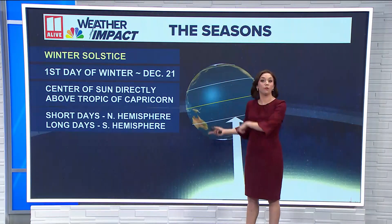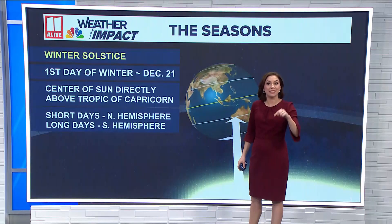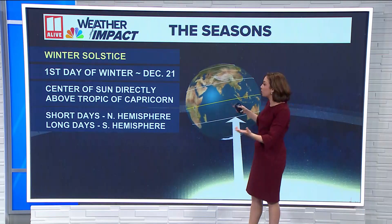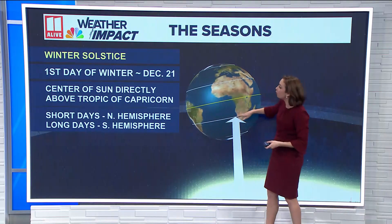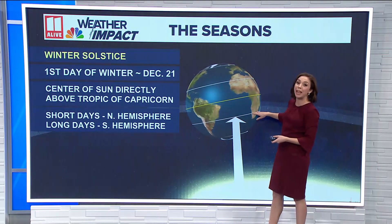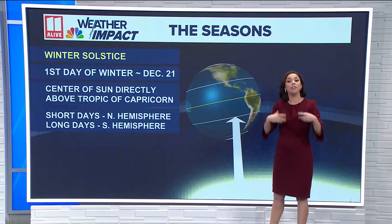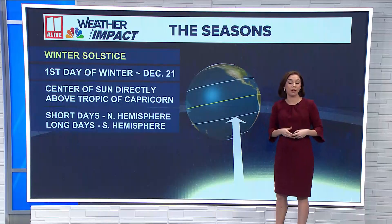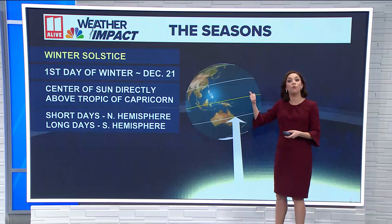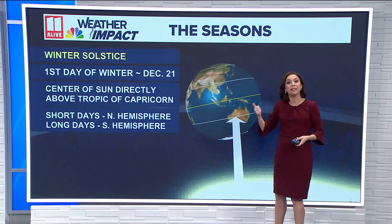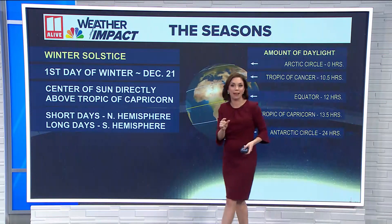Now let's flip to the reverse. The winter solstice for us, which is happening this weekend, is our first day of winter — December 21st. That's when the sun is over the Tropic of Capricorn, which is in the southern hemisphere. They'll get to experience summertime, but meanwhile here in the northern hemisphere we have wintertime, and that means our shorter hours of daylight.